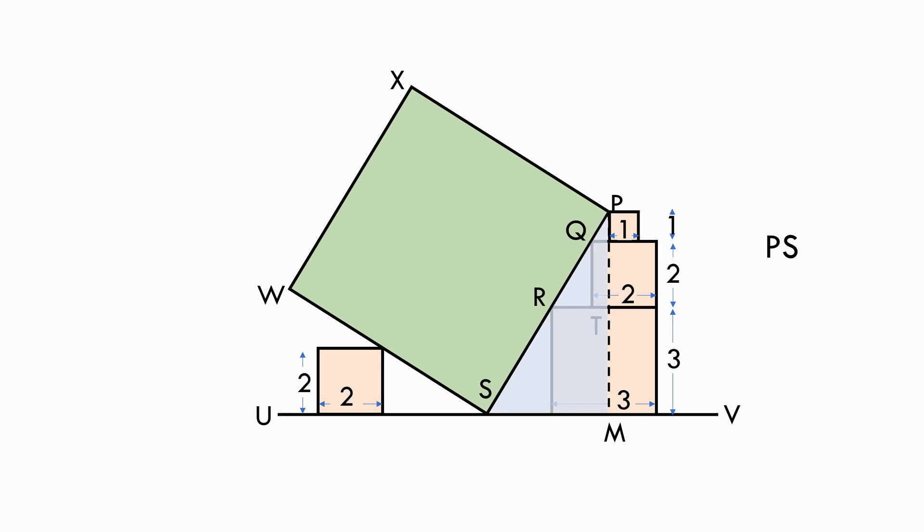In the right angle triangle thus formed, we do have the measurement for PM which is equal to 1 plus 2 plus 3 equals to 6 units. If we can get the measurement for SM, we can get the side of the square by Pythagoras theorem.